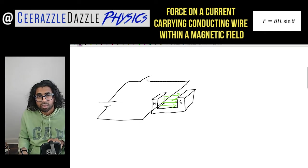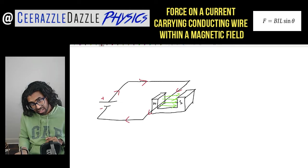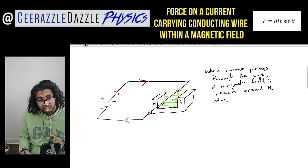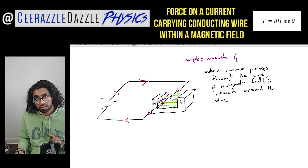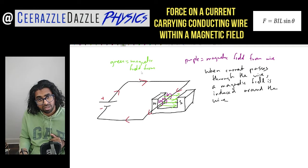When we press the switch, the current flows through the wire — from positive to negative, going around the back and down in this diagram. When current passes through the wire, a magnetic field is generated around the wire. I'll use purple for that, so purple equals the magnetic field from the wire. And green equals the magnetic field from the permanent magnets.